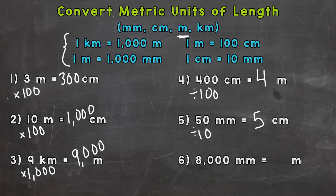Number six: 8000 millimeters equals how many meters? There are a thousand millimeters in every meter, so we need to split that 8000 into groups of a thousand — each group of a thousand is one meter. Millimeters to meters: divide by a thousand. So we get eight meters.